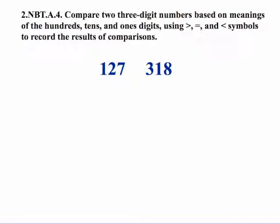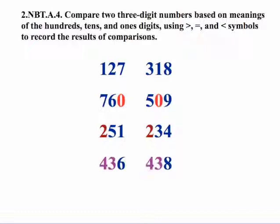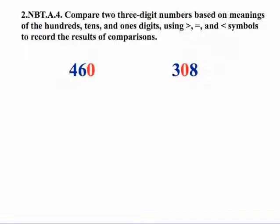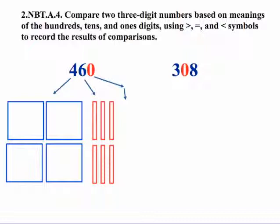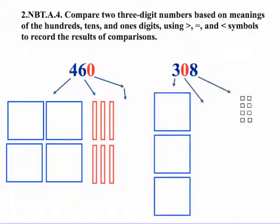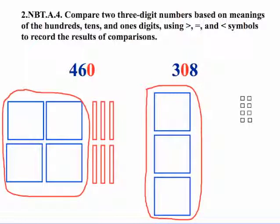Now students need to experience comparisons of some unique situations. For example, they need to see some examples, get some experience with numbers that have a zero. They also need experience with numbers that have the same hundreds place. And they also need experience with a comparison where the hundreds and tens place are the same in both numbers. Let's compare 460 to 308. On the left hand side we have 400, six tens and no ones. For the 308 we have three hundreds, no tens and eight ones. We look at the hundreds place, we have 400 versus 300. So we already know without any additional comparison that 460 is greater than 308.